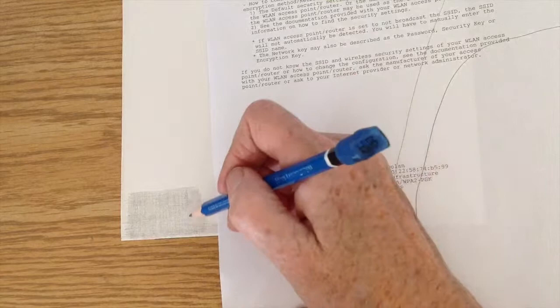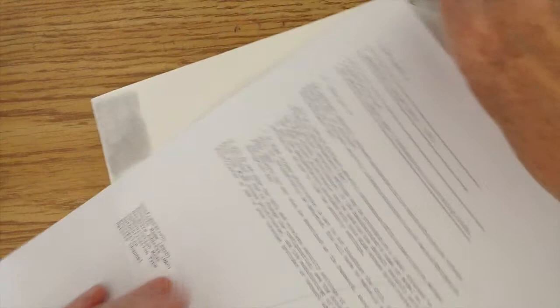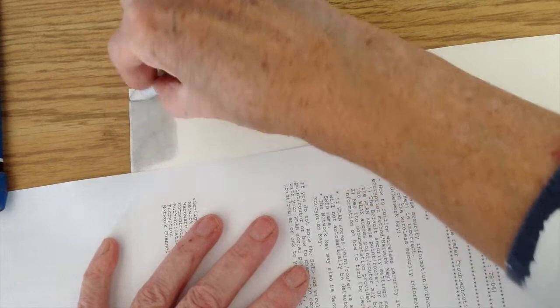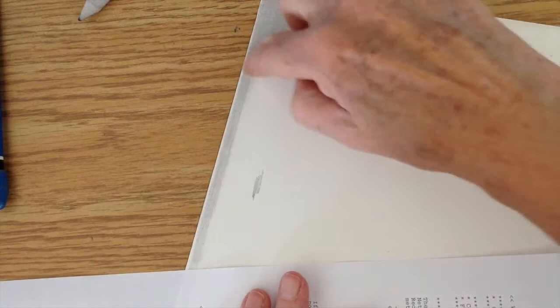All right, so that's done. So now we will blend it with a stump. Now depending on what you're blending with, it's going to give a different effect.